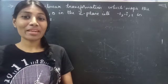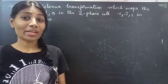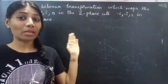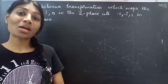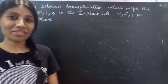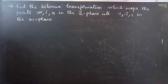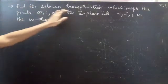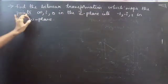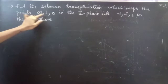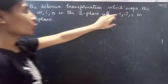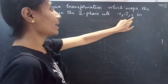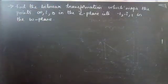Hello everyone, this is Jay Kalpana here. In this video we are going to see a problem from conformal mapping — we are going to find the bilinear transformation using componendo and dividendo. The problem is: find the bilinear transformation which maps the points infinity, i, 0 in the z-plane into minus 1, minus i, and 1 in the omega plane.